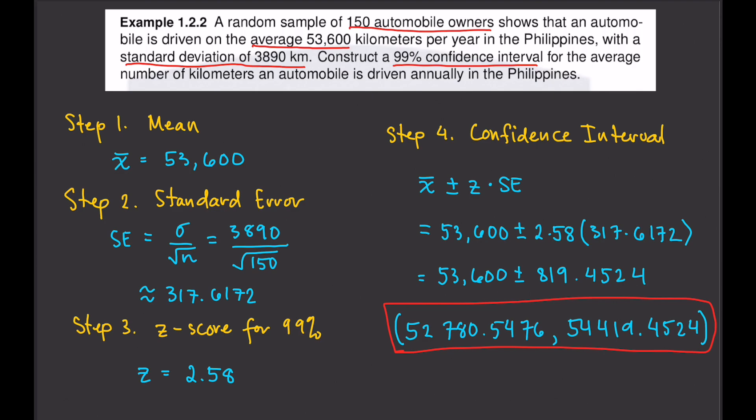So that's our 99% confidence interval for the average number of kilometers an automobile is driven annually in the Philippines. We are 99% confident that this average is between 52,780 kilometers and 54,419 kilometers.